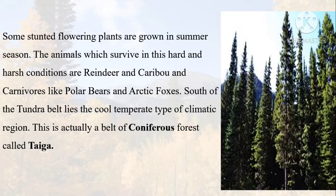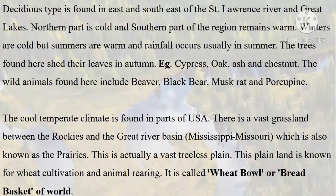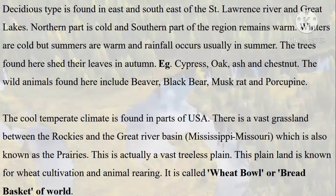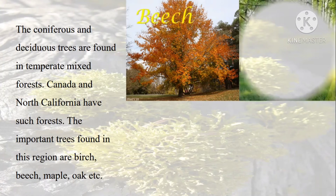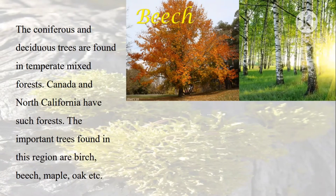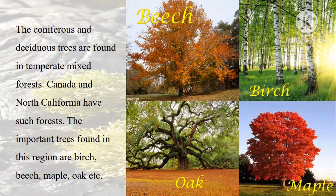South of the tundra belt lies the cold temperate climate region with a belt of coniferous forest called taiga. The deciduous type is found in the east and southeast of the St. Lawrence River and Great Lakes. Northern parts are cold and southern parts remain warm; winters are cold but summers are warm and rainfall occurs usually in summer. The trees here shed their leaves in autumn. Coniferous and deciduous trees are found in the temperate mixed forests of Canada and North California. Important trees include birch, maple, and oak.